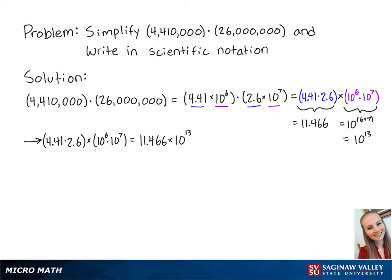We want to write this in scientific notation, which means we need to move the decimal to the left one time. So this equals 1.1466 times 10 to the 1 times 10 to the 13th. Using our exponent rules again, this equals 1.1466 times 10 to the 14th. And this is the final answer.